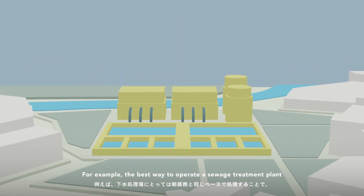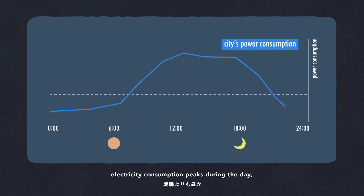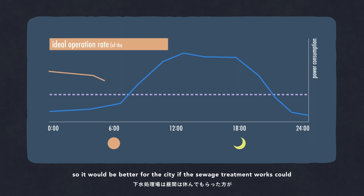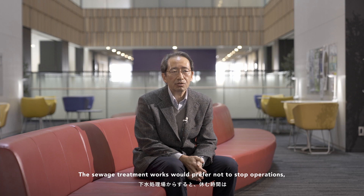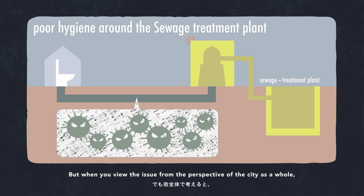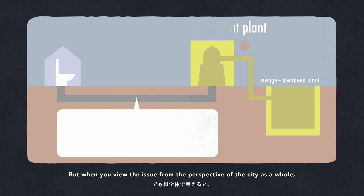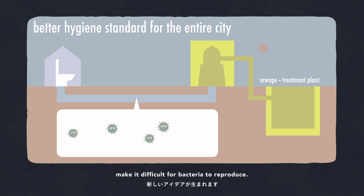For example, the best way to operate a sewage treatment plant is to keep it in operation all day, every day. But when you look at the city as a whole, electricity consumption peaks during the day rather than in the morning or evenings, so it would be better for the city if the sewage treatment works could temporarily stop operations during the day. The sewage treatment works would prefer not to stop, as this leads to the growth of bacteria. But when you view the issue from the perspective of the city as a whole, you discover new ideas such as designing new sewage treatment works that make it difficult for bacteria to reproduce.